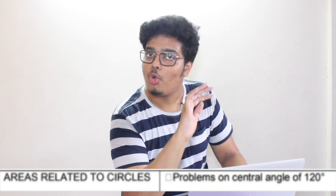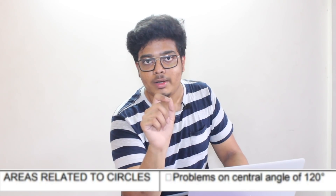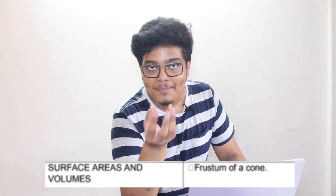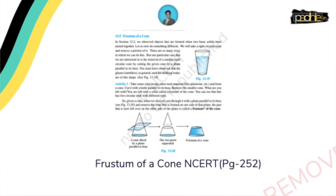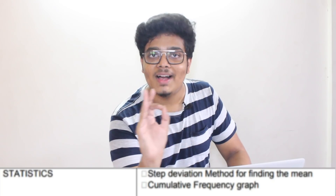You can check the PDF linked below for full details. In Areas Related to Circles, problems involving a central angle of 120 degrees are removed. In Surface Areas and Volumes, the frustum of a cone — which was a big topic — is removed. In Statistics, the step deviation method for finding the mean and cumulative frequency distribution are removed. In Probability, there is no deletion.